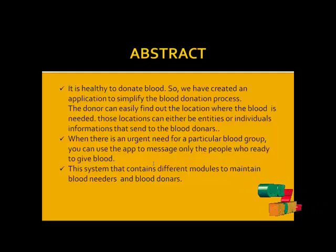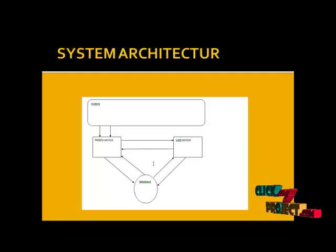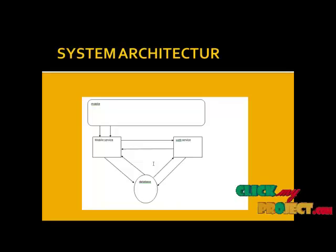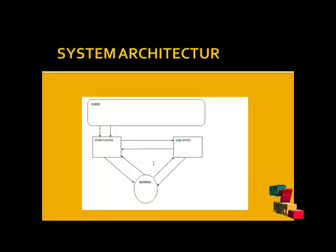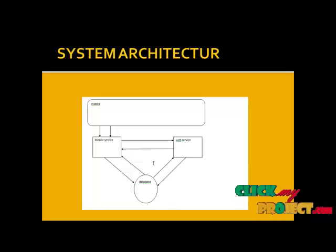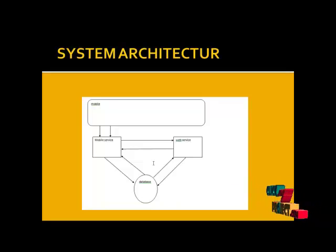Let's see the data flow diagram of this project. Our application can be installed on any smartphone. After that, users can access the application features through their mobile phones. The application needs mobile permissions to function correctly, specifically GPS permission to access the mobile GPS device. Our application uses an online database, so it needs an internet connection to insert or retrieve donor details.